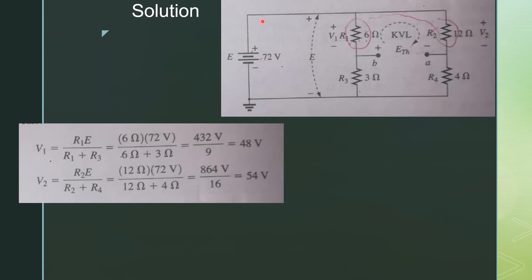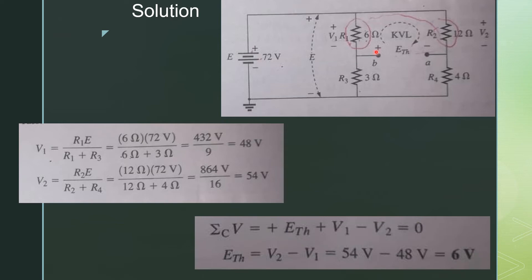Now we apply the voltage divider rule to this loop to get the value of V2. So V2 is equal to R2 times E divided by R2 plus R4. Substituting the values, we get V2 equal to 54 volts. Now, applying KVL to this loop, we see that E Thevenin plus V1 minus V2 is equal to 0. Substituting the values, we get E Thevenin equal to 6 volts.